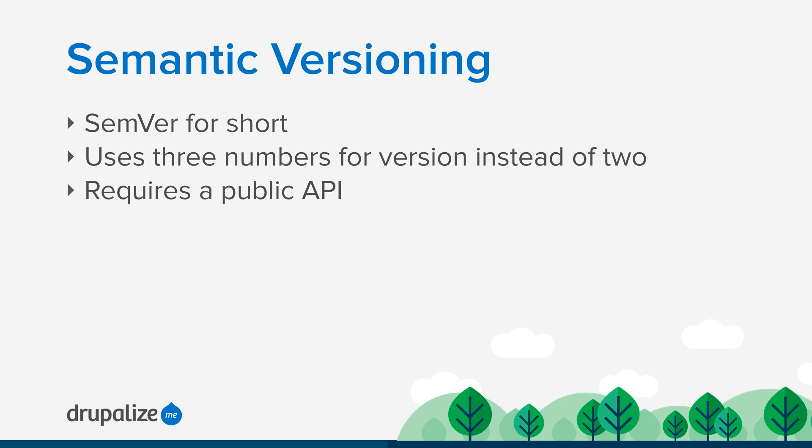One important thing about semantic versioning is that it requires a public API. If you are saying you're using semantic versioning, you have to have some kind of publicly declared API, because the versioning numbering system is dependent on things like whether or not you're breaking your API or how the version is changing the API. If you don't have something publicly declared that can be measured against to see if something is actually breaking, then the semantic versioning numbering doesn't make as much sense. It's an assumption that you have a public API, and with semantic versioning you're letting people know what changes affect the API so they can decide whether to upgrade and what changes they'll need to make in their dependencies.